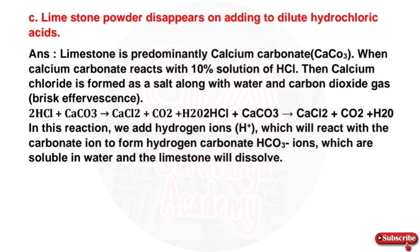The reaction gives rise to CaCl₂ plus CO₂ plus H₂O. In this reaction, hydrogen ions (H⁺) react with carbonate ions to form hydrogen carbonate (HCO₃⁻) ions, which are soluble in water, and the limestone will dissolve. Calcium carbonate in 10% hydrochloric acid solution reacts to form salt and water, and carbon dioxide gas evolves into the environment.